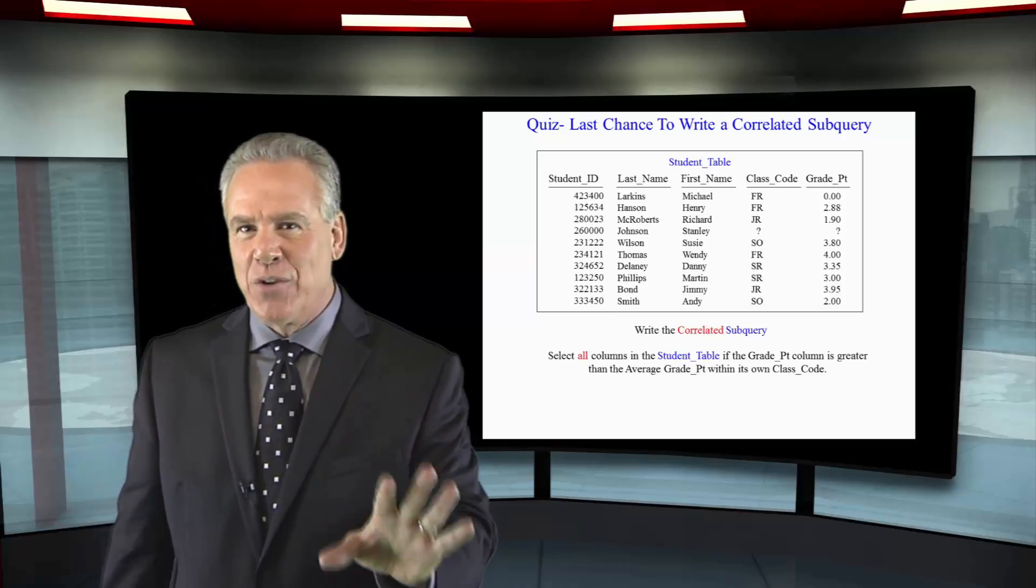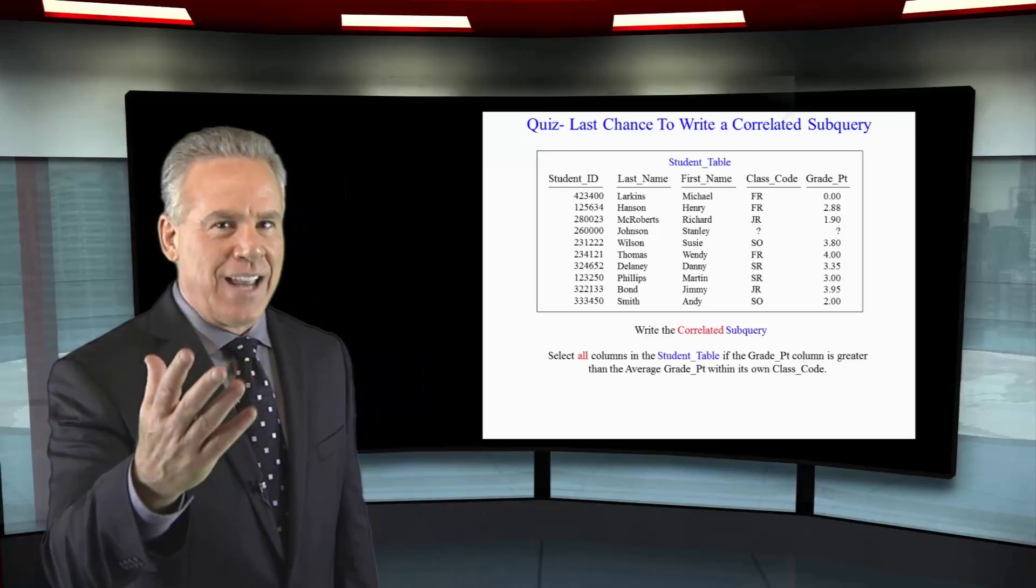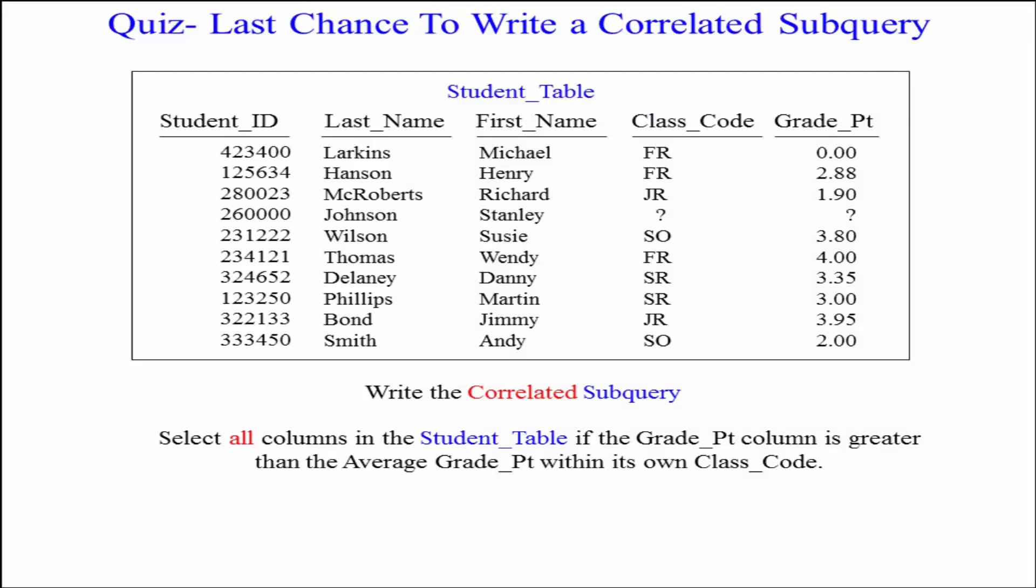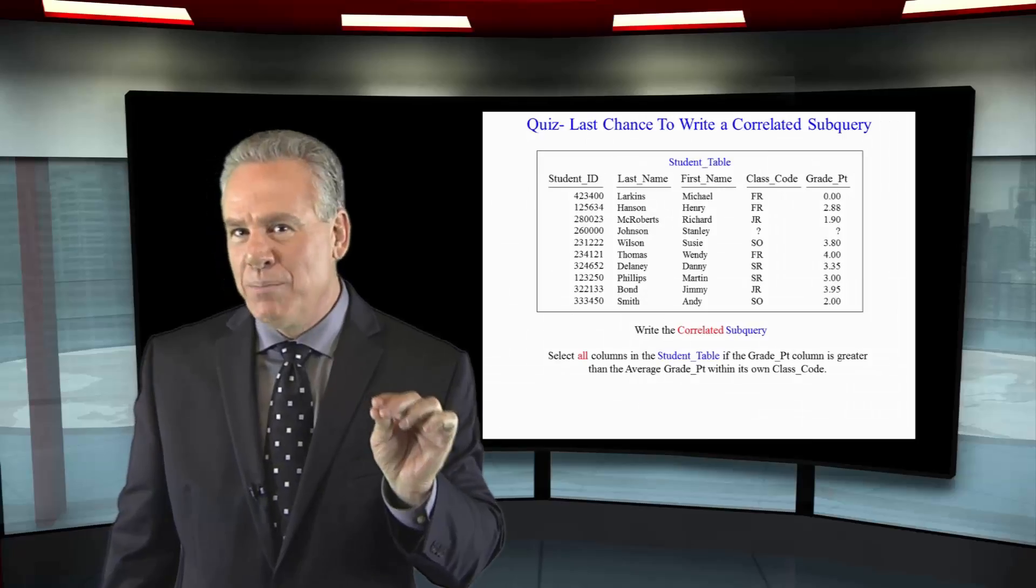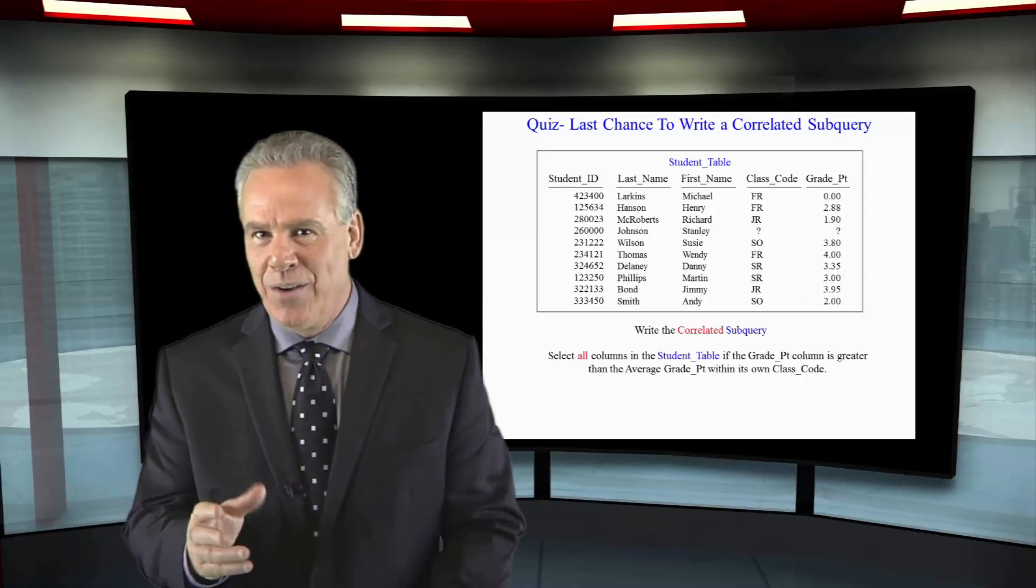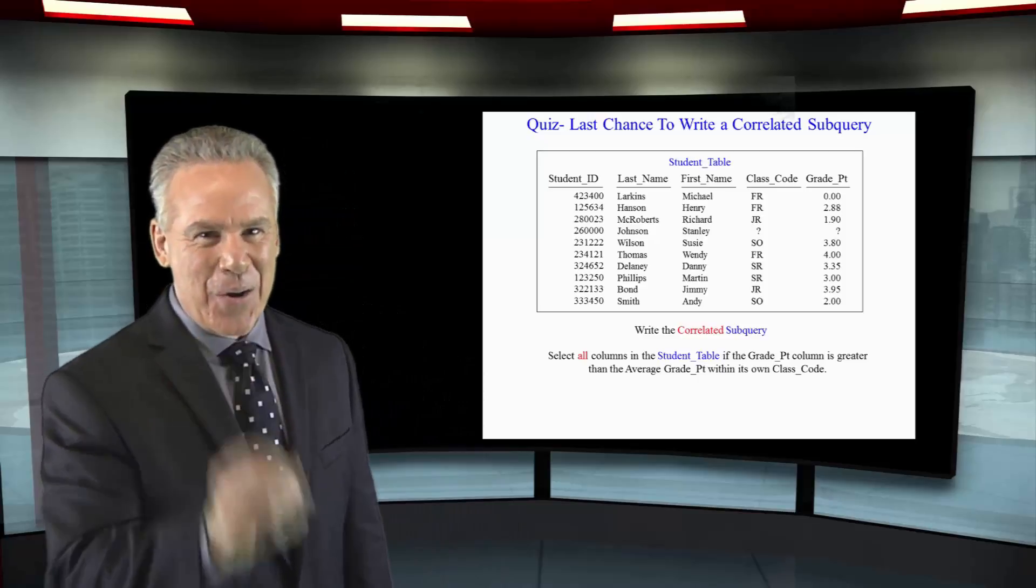I've got a different table. You can make this happen. This is going to be the student table. We've got the student ID, the last name, the first name, the class code, the students are in freshman, sophomore, junior, seniors, and their grade point. Write the correlated subquery: SELECT everything FROM the student table IF the student has a grade point that's greater than the average grade point within their own class code. Good luck.